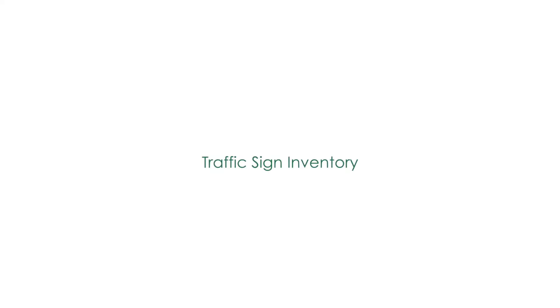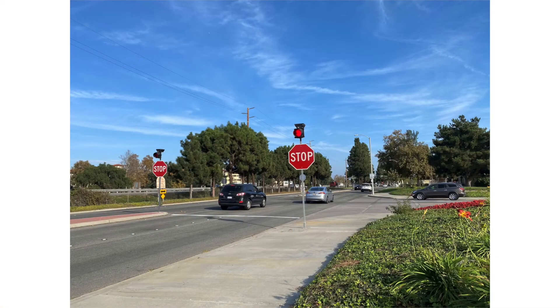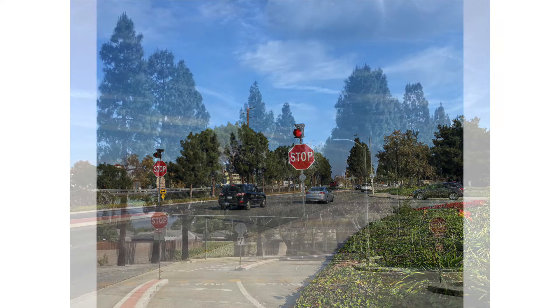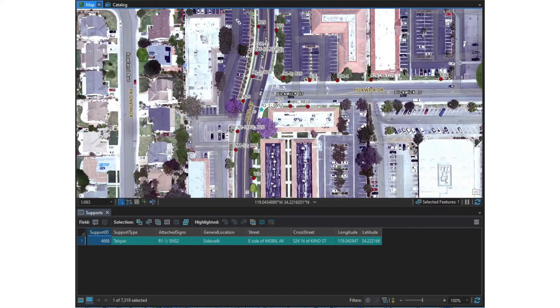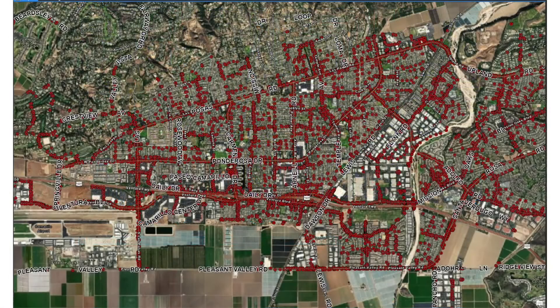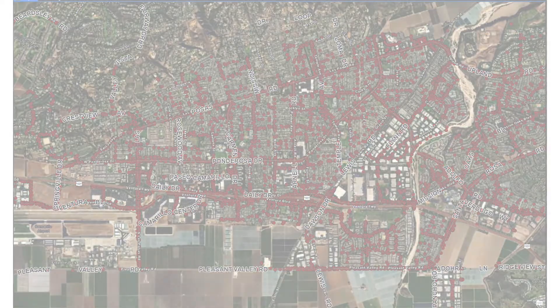The city maintains all the street signs out on the road. There are over 7,700 poles and over 13,000 signs that we maintain. We have all kinds of information — we know things like signs that face south fade faster from the sun, and we keep track of maintenance on them, how often they get vandalized or hit by cars, and their different reflectivity.